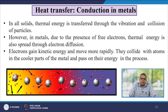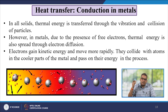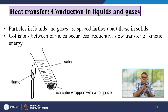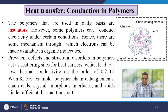In all solids, thermal energy is transferred through vibration and collision of particles. However, in metals, due to the presence of free electrons, thermal energy is also spread through electron diffusion — electrons gain kinetic energy, move more rapidly, collide with atoms in cooler parts of the metal, and pass on their energy. In liquids and gases, particles are spaced farther apart than in solids, collisions occur less frequently, leading to a slower transfer of kinetic energy.